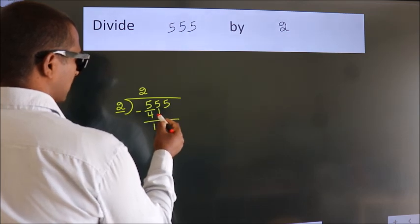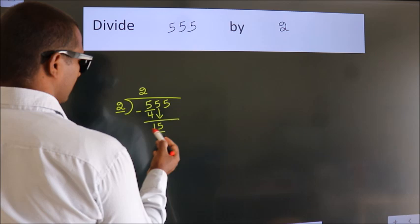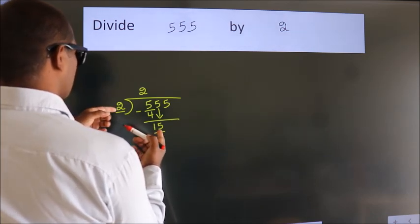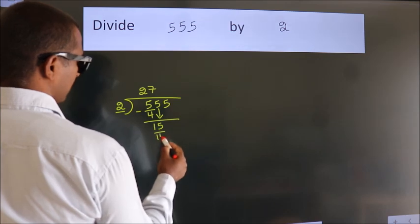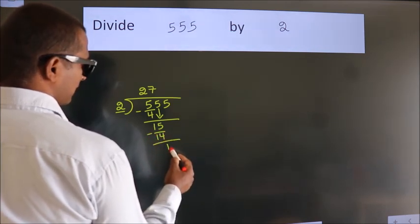After this, bring down the beside number. So 5 down, so 15. A number close to 15 in 2 table is 2 sevens, 14. Now we subtract. We get 1.